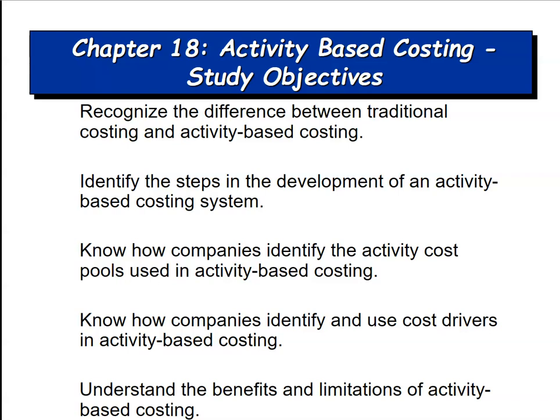Let's take a look at Chapter 18, which is called Activity-Based Costing. We have some learning objectives to go over. So far this semester, at least in the managerial accounting part, we've been dealing with what is referred to as traditional costing. We're going to distinguish between traditional costing and activity-based costing in this chapter. Some of the things in the handout should be a review, but we'll go over traditional costing methods to help us distinguish between the two.